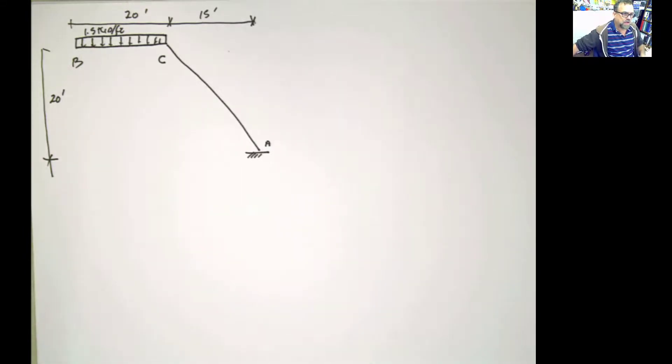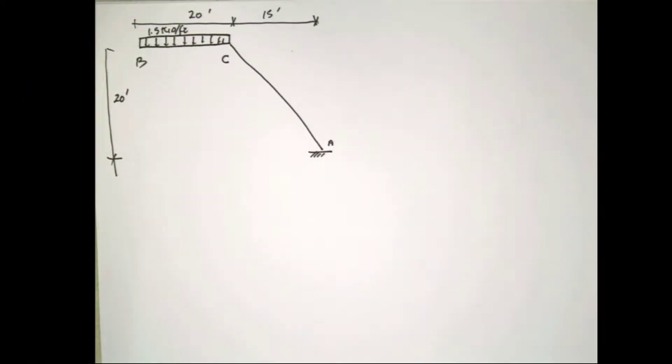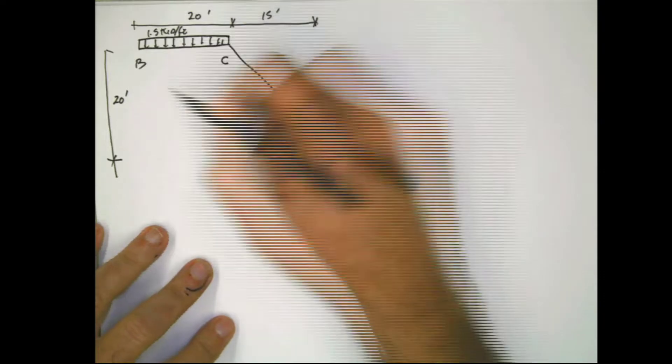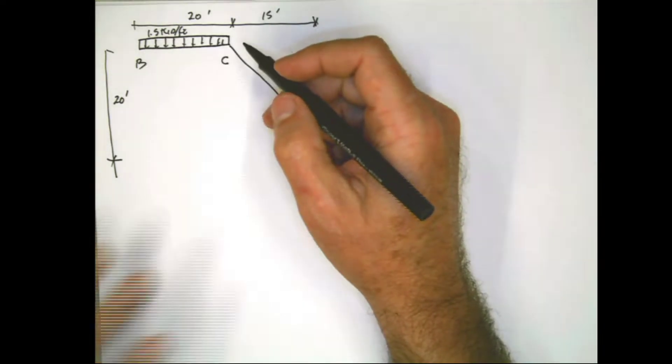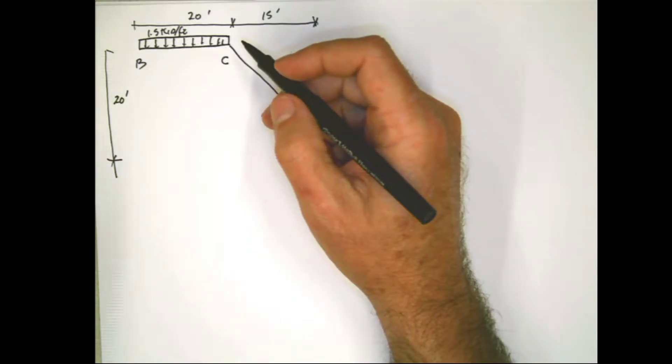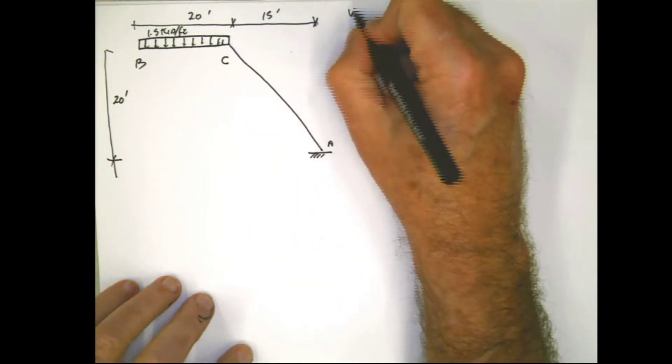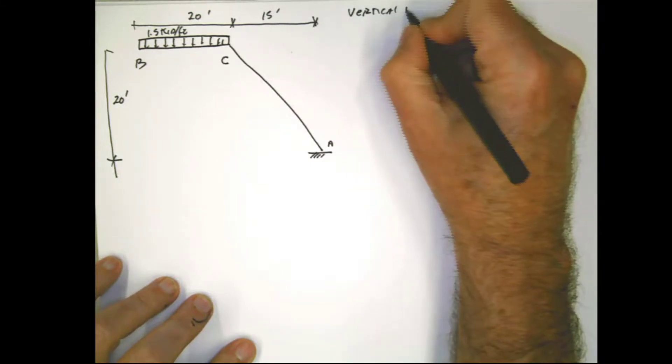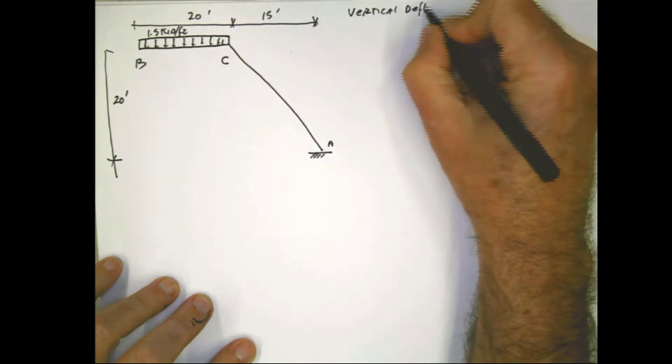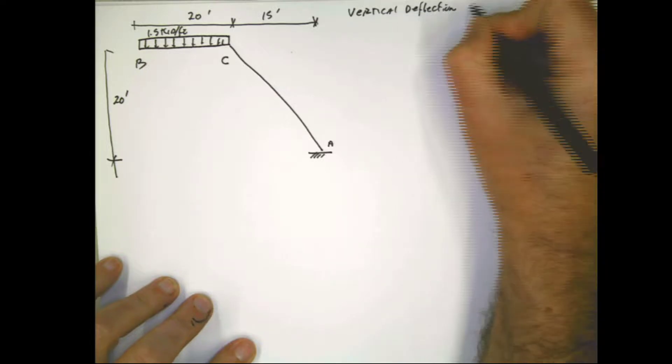Hello guys, again. Another example of virtual work in a frame. This is the one that we are going to work right now. So this is what we have. We have this real structure here. And we have to calculate the vertical deflection at the point B. Vertical deflection at point B. This is what the problem is asking.